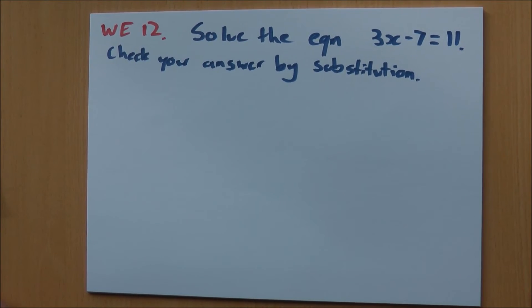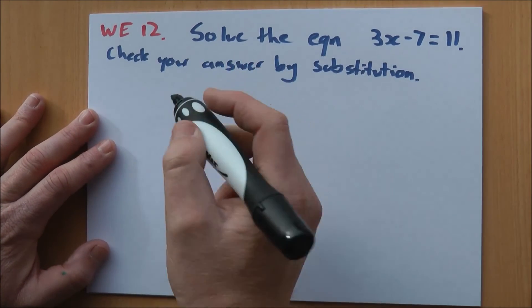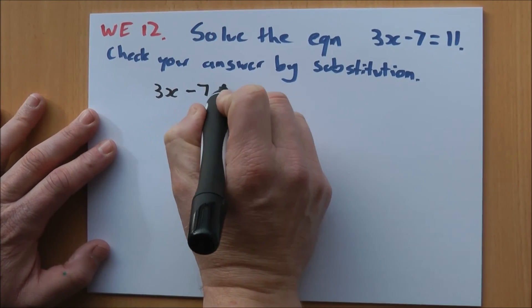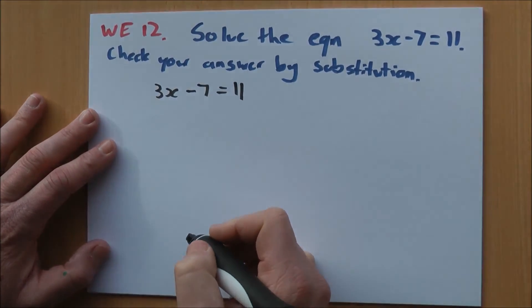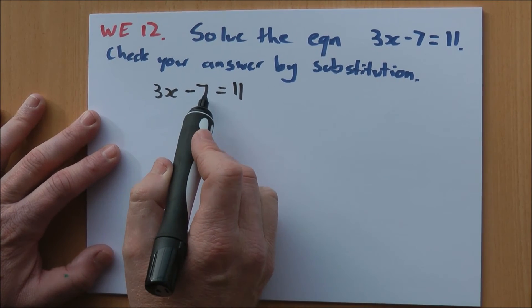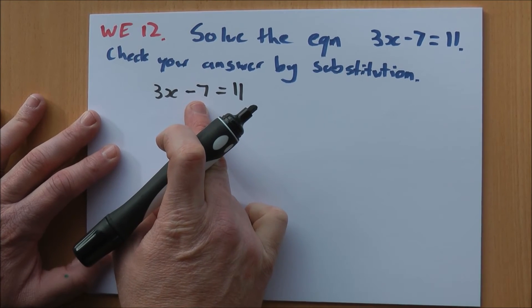Worked example 12. Solve the equation 3x minus 7 equals 11 using the balance method. Check your solution by substitution. So we're just checking that we're right at the end here. So let's have a go. 3x minus 7 equals 11, there's my equation. So what I'm going to do in this case is I'm not going to worry about the 3x yet. I'm going to deal with this minus 7 on the end here first.